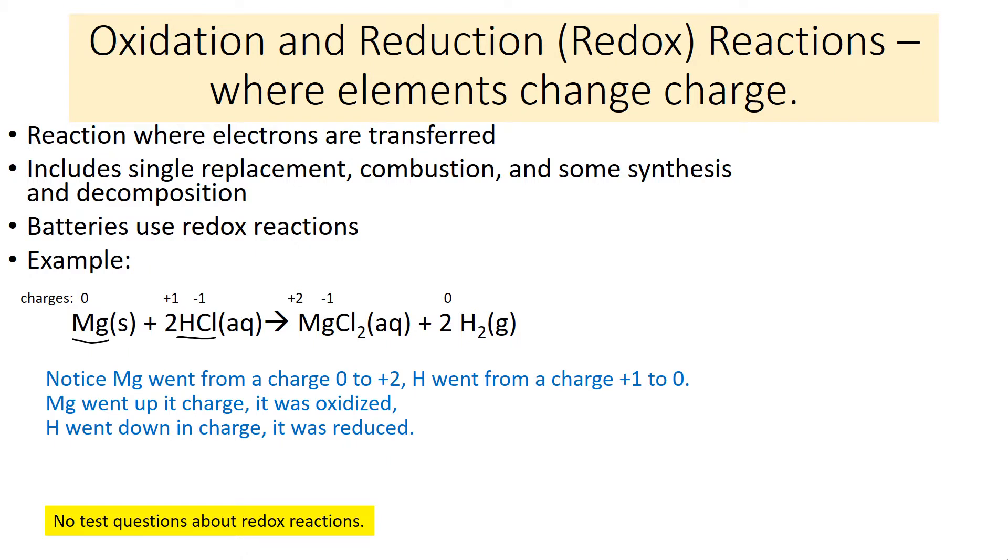You can see what's changed is the magnesium went from zero to plus two, and the hydrogen went from plus one down to zero. One went up. Magnesium went up in charge, it was oxidized. Hydrogen went down and it was reduced. It always has to happen together. The electrons flow from one thing to another. That's an oxidation reduction where you have a change of charge.